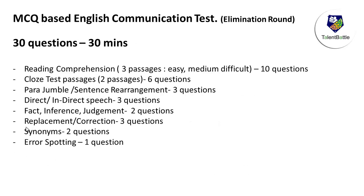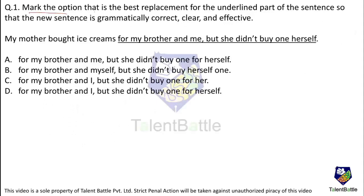Mark the option that is the best replacement for the underlined part of the sentence so that the new sentence is grammatically correct, clear, and effective. The sentence is: 'My mother bought ice creams for my brother and me, but she didn't buy one herself.' The error is in the underlined part, and we have to check which option holds true.